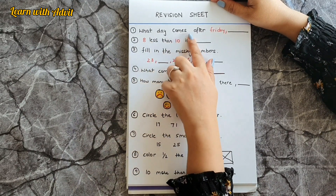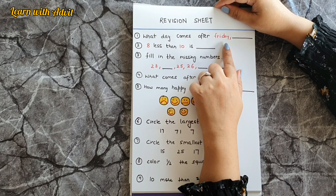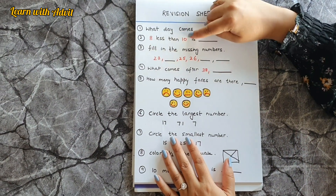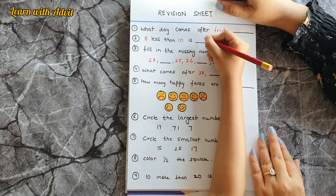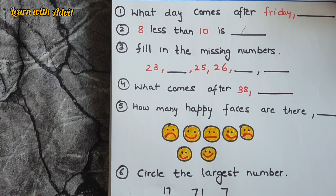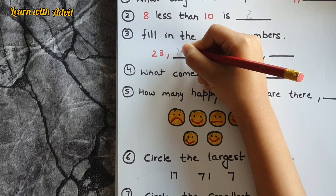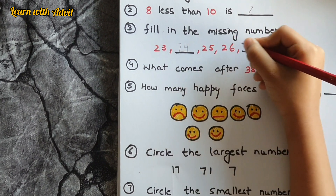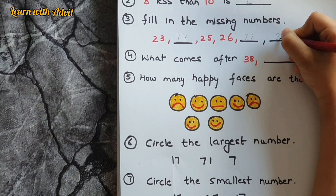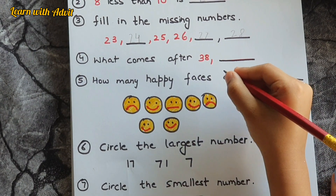Tell me what day comes after Friday — Saturday! Can you tell me the spelling of Saturday? S-A-T-U-R-D-A-Y. Very good. So 8 less than 10 is 2. Very good. Now fill in the missing numbers: 23 and 24, then 28. What comes after 38? 39. Very good!